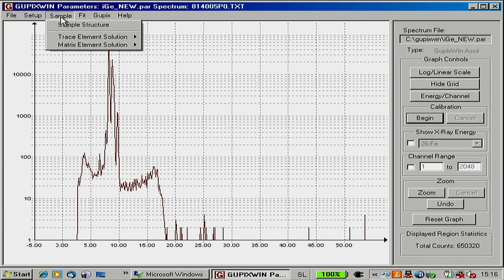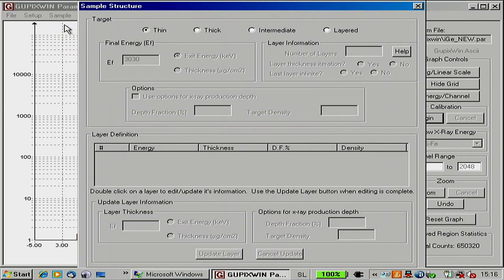So now we go sample. Sample structure. I mentioned to you, you can have thin samples in PIXE. No stopping, no absorption, easy life. You can have thick samples. A lot of integration for a software. And you can have even more complicated, intermediate thickness, where you need to do that integration from one energy to another. In our case, it's easy life. It's a thick target. You click there, thick target.